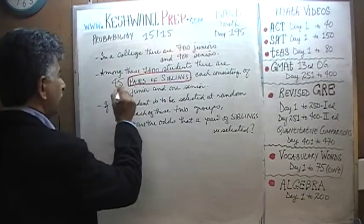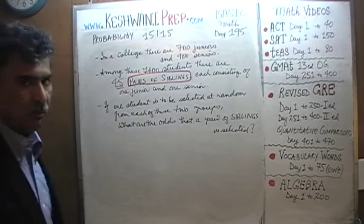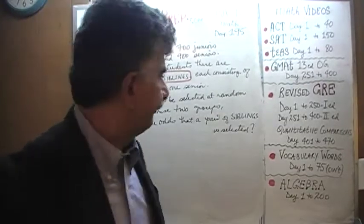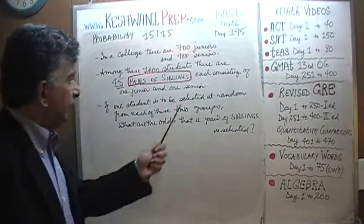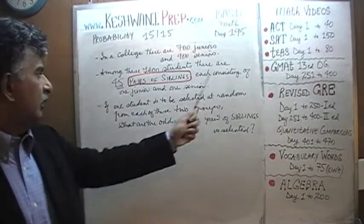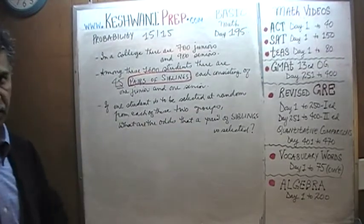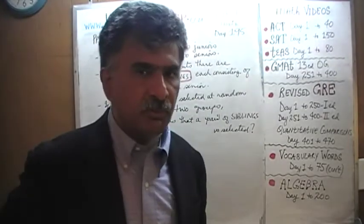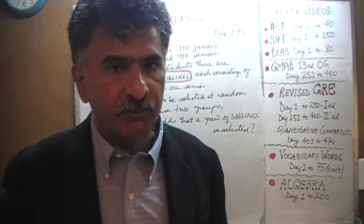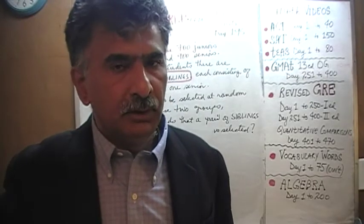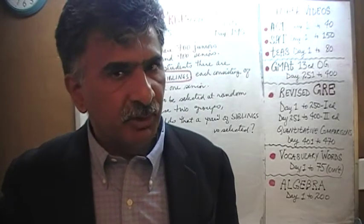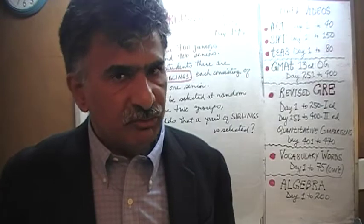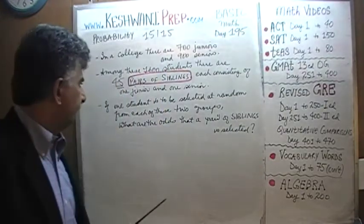Each pair is either a brother and sister, two sisters, or two brothers — whatever it is, a pair of siblings. Each pair consists of one junior and one senior. In other words, we are ruling out situations where both siblings are juniors or both are seniors. These pairs of siblings are such that one is a junior and one is a senior.